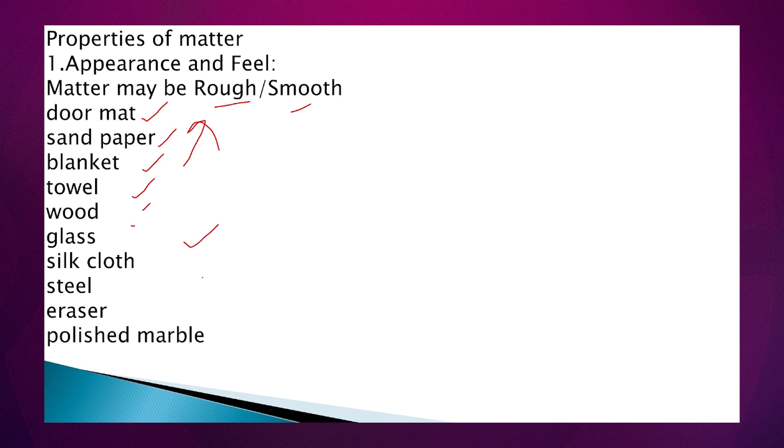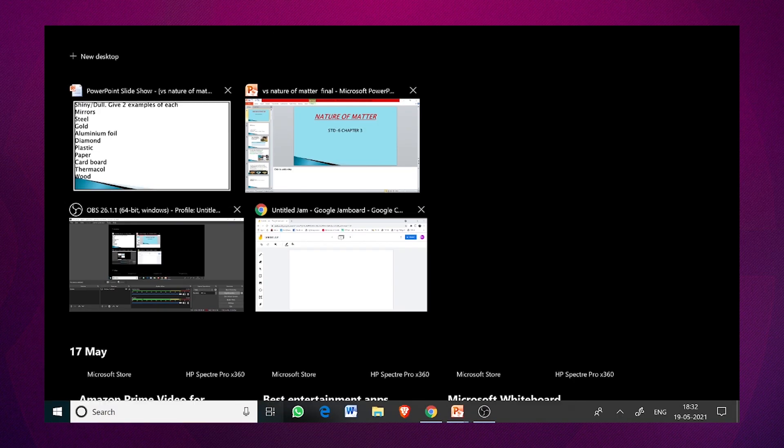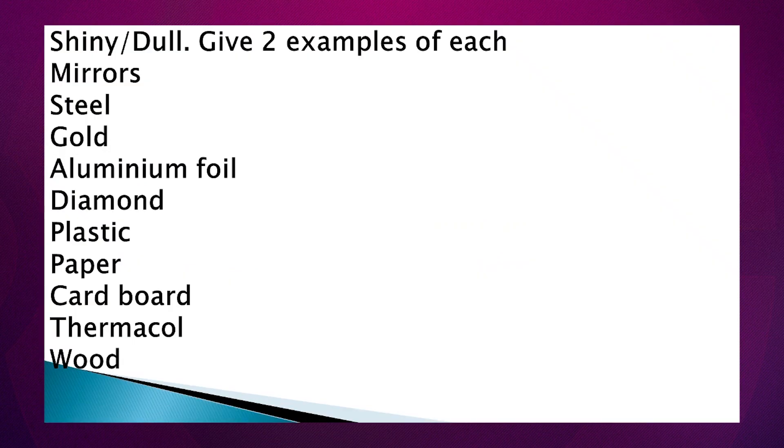Next, glass, silk, cloth - these are smooth feeling, smooth in touching. Like shiny or dull. Shiny or dull means lustrous. Shiny means lustrous. They are dull in their appearance. So you have to learn at least two examples.